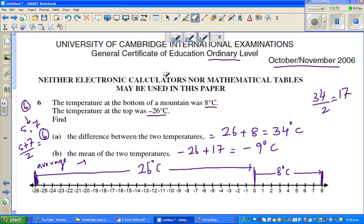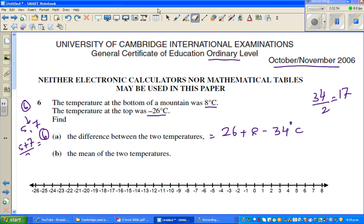The mean of the temperature is minus 9 degrees centigrade. So this is your minus 9, and this is your minus 26, and this is your 8. Now this is a difference of 17 degrees centigrade. 0 to 9 is 9, and 9 plus 8 is 17. And from here to here, this is also 17 degrees centigrade. So the mean between these two is minus 9 degrees centigrade.